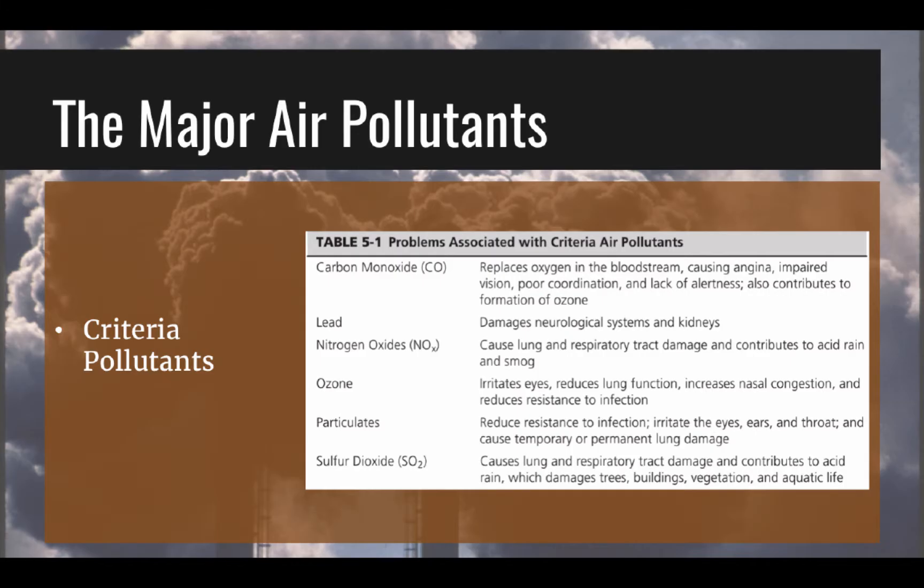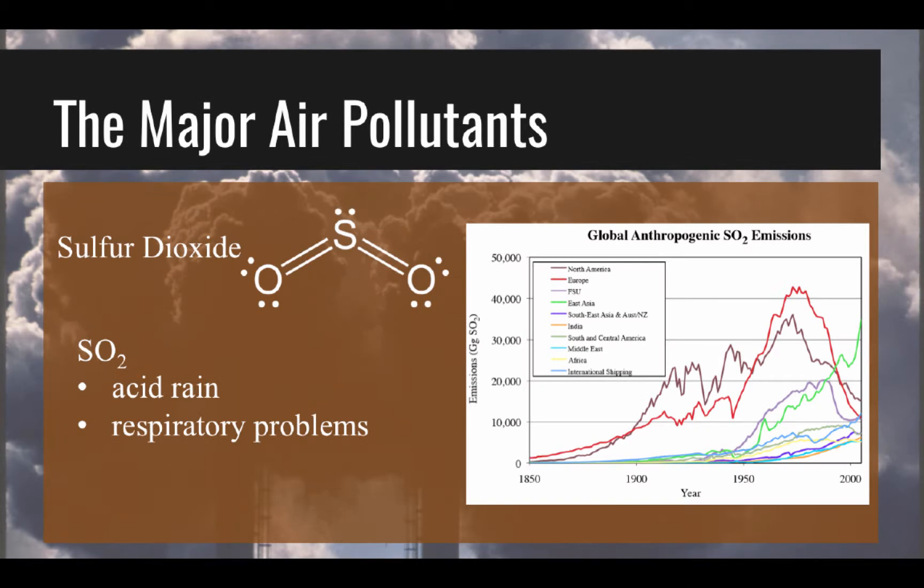Six major pollutants were targeted by the 1970 Clean Air Act. This group of pollutants was called the Criteria Pollutants. The term 'Criteria Pollutants' derives from the National Ambient Air Quality Standards requirement that the EPA must describe the characteristics and potential health and welfare effects of these pollutants.